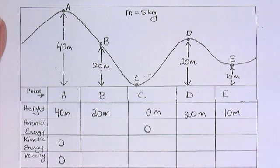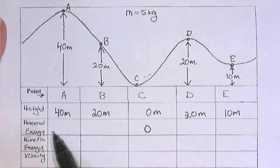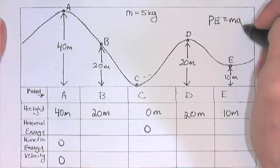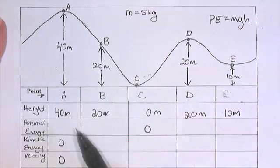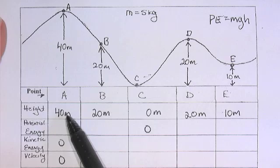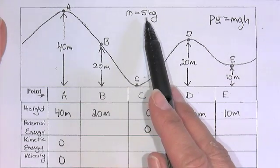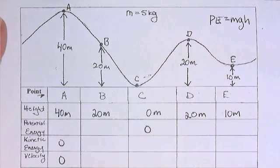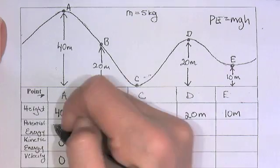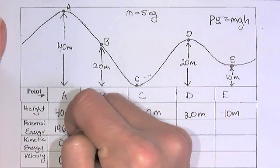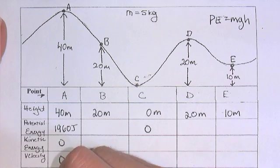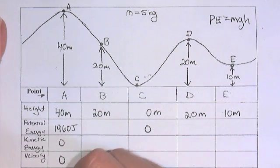And then we are going to find the potential energy here using potential energy equals mgh by using 40 times 9.8 or g times m, which is 5. So it's actually 5 times 9.8 times 40. And we get 1960 joules. Since the total energy is equal to the potential energy plus the kinetic energy, that means the total energy is 1960 joules.